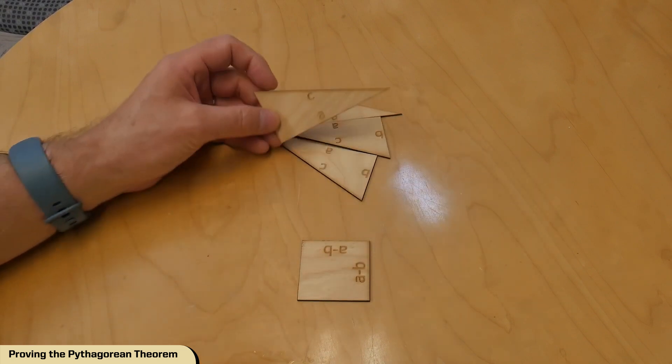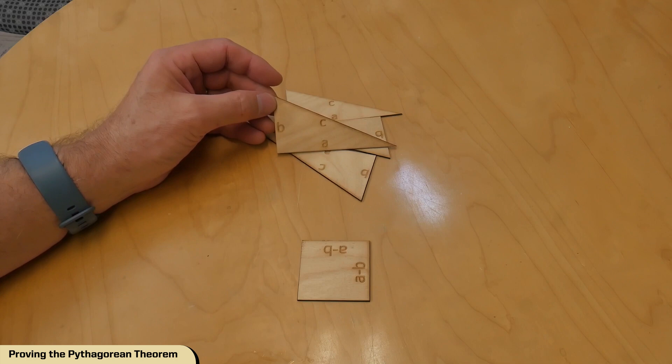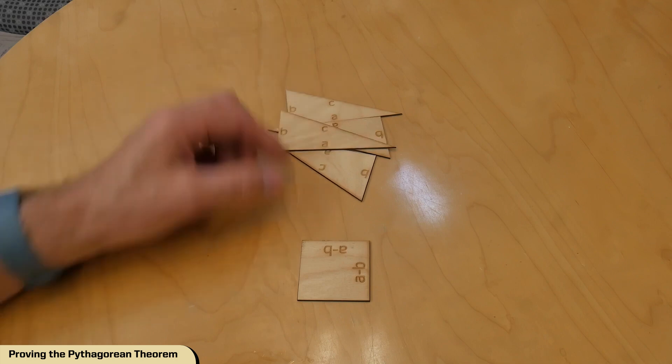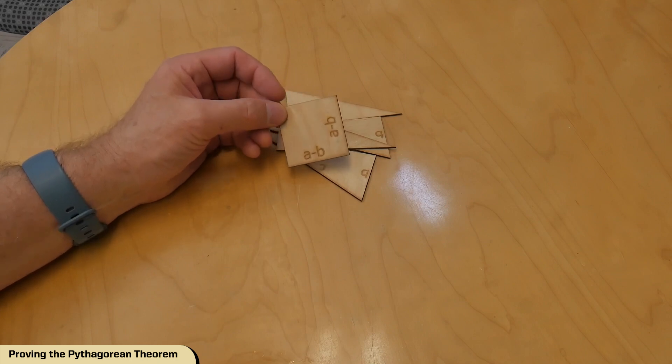The sides of these triangles are labeled a, b, and c, just like you'd see in the Pythagorean theorem. And this little square has side lengths that are a minus b.